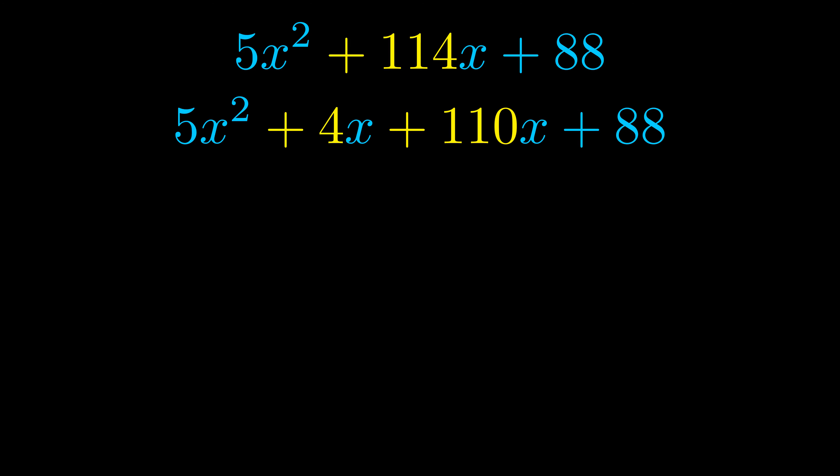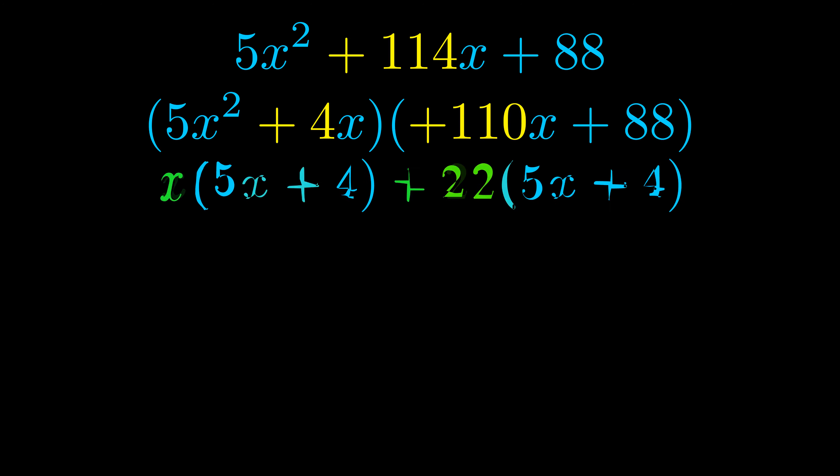Once we've done this, we put parentheses around the first term and the last term so that we can take the greatest common factor out of both terms. We can see the greatest common factor is now outside in green. Notice also how what remains inside the parentheses is the same in both cases. The blue values are the same.